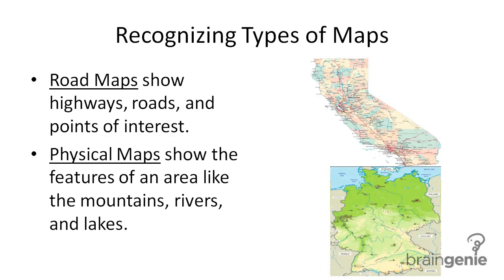And finally, physical maps. Physical maps show the features of an area like the mountains, rivers, and lakes. So this physical map — it's blue over here, which shows us an ocean. You can see the blue lines running through the green might represent rivers, and then the green shows where the land is.